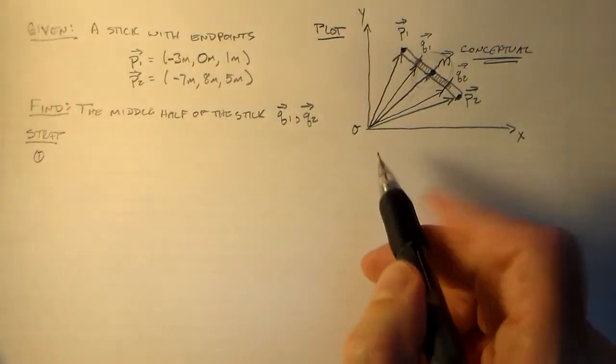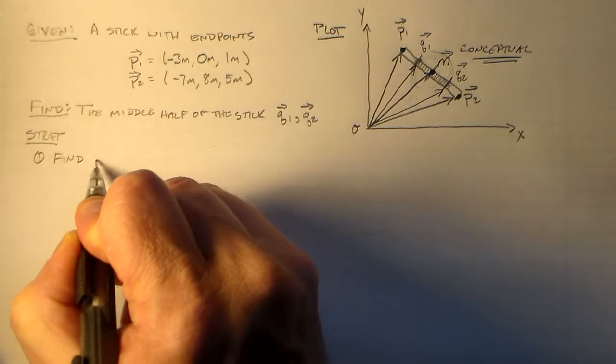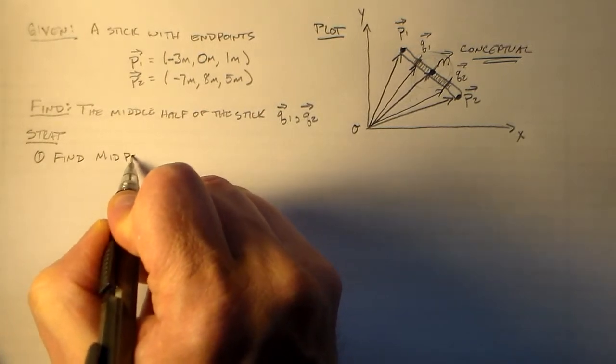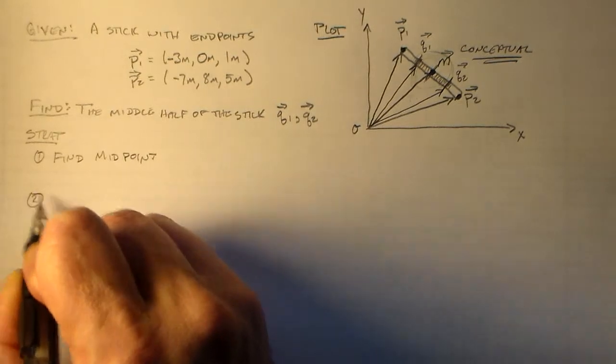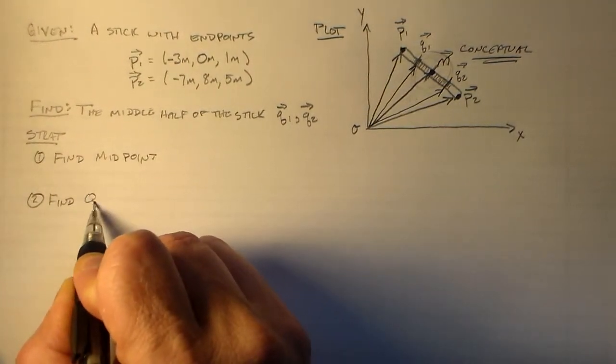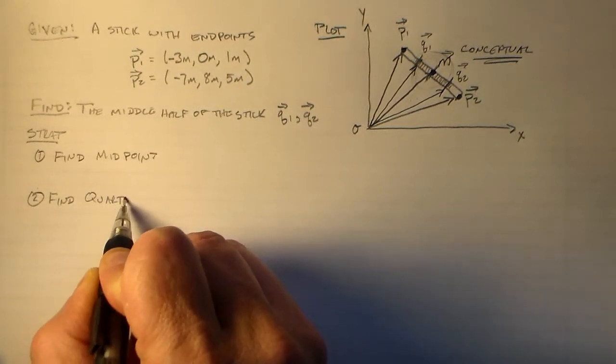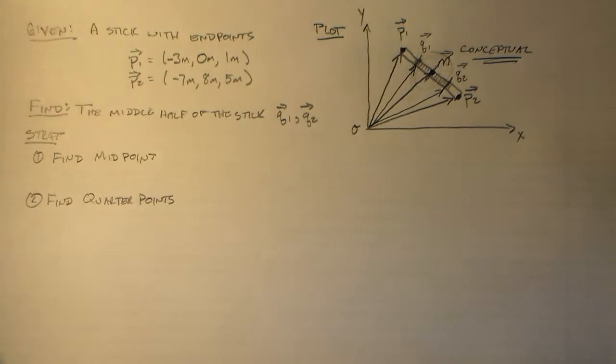So to do this, I guess first we have to find the midpoint. And then after we find the midpoint, then we'll have to find the quarter points. And when we have those, then we can think about what to do. I think for this one I'll try to do some checking so we can logically see if we actually got the process right by checking the answer.